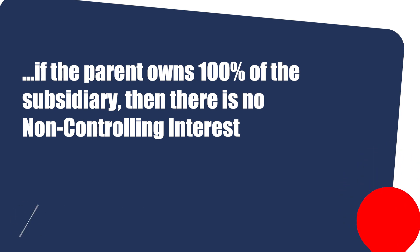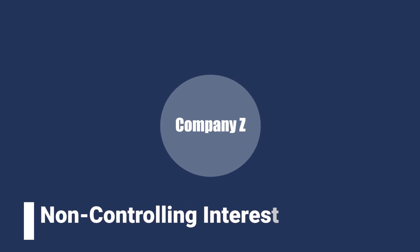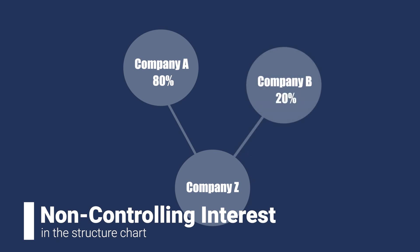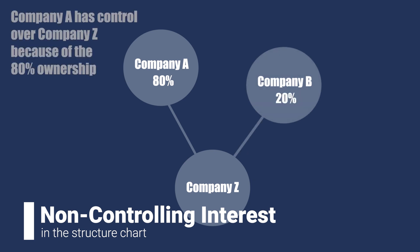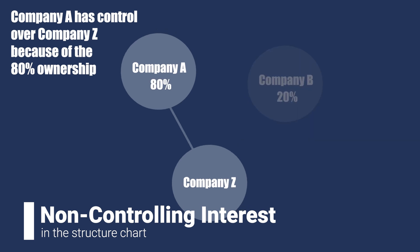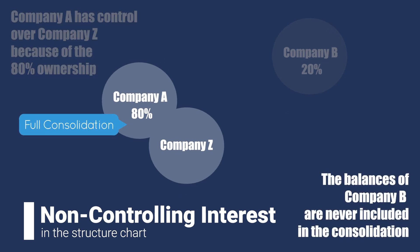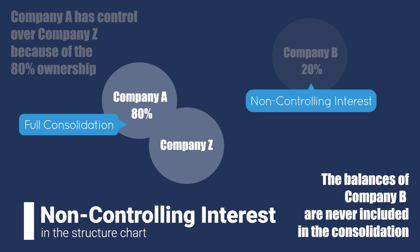How does it look visually? Imagine that we have Company Z with two shareholders: Company A, which owns 80%, and Company B, which owns 20%. Under the assumption that A has control over Z because of the 80% ownership, we now have to consolidate these two companies under IFRS 10. The balances of Company B are never included in the consolidation. The 20% shares owned by B in Company Z become the minority interest.